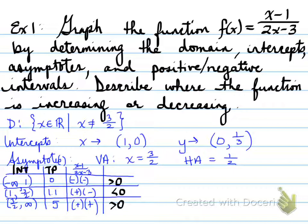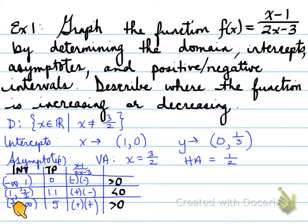For positive-negative intervals, we use an interval chart. The intervals are determined based on the x-intercepts and the vertical asymptote. We pick test points within each interval, plug them into the numerator and denominator to get a sign, and determine which intervals are positive and which are negative. The critical values to include are the x-intercepts and the vertical asymptote.